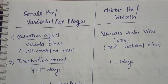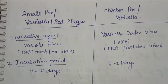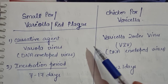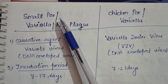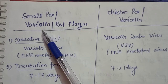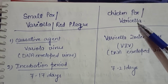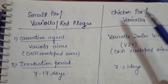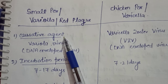Hello students, welcome to my YouTube channel. In this video we will learn the difference between smallpox and chickenpox. Smallpox is caused by variola virus and is also known as variola and red plague. Chickenpox is caused by varicella zoster virus, also known as varicella. The first difference is according to the causative organism.